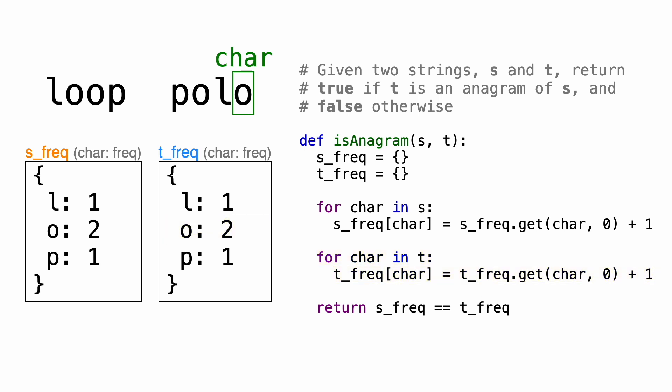Now remember, if two strings have the same frequencies of characters, then they are anagrams. So the last step is just to compare the two dictionaries and return true if their contents are the same, and return false if not. Remember, in Python, comparing dictionaries with the equality operator compares the contents of each dictionary with the other. So if both dictionaries have the exact same key-value pairs, then this line will return true.